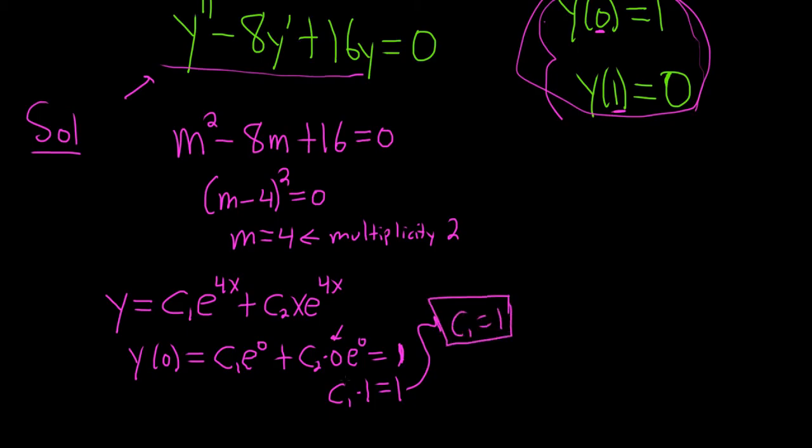That's pretty good. So we have c1 equals 1. That wasn't so bad. And then y of 1 equals 0. Let's try that. This will be c1 e to the 4 plus c2 e to the 4, right? Because x is 1. So it goes away. You just get e to the 4. And this is equal to 0.